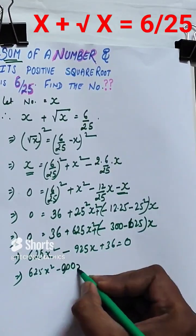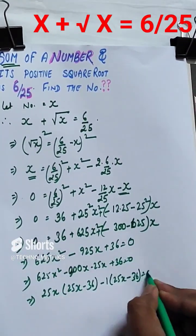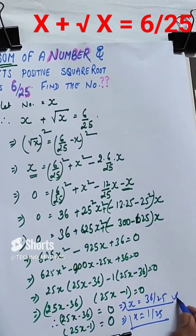Finally we get x equals 36 by 25 and 1 by 25. 2 by 25 satisfies the criteria.